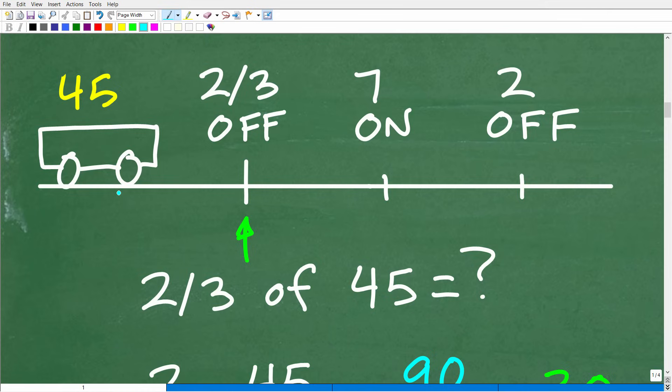And the first part of the problem says two-thirds of the people get off the bus. Well, how many people is that? Well, we need to figure out what is two-thirds of 45. All right. So that's my question to you. What is two-thirds of 45? Well, how do you find two-thirds of anything? Well, you just multiply two-thirds times 45.